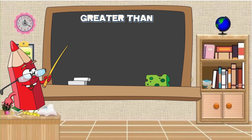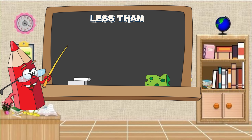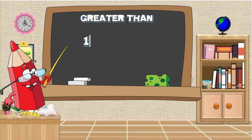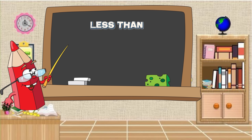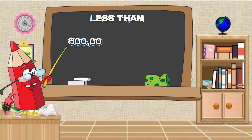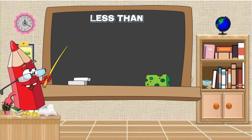Greater than: one hundred and five is greater than one hundred. Less than: ten thousand is less than one hundred thousand. Greater than: one thousand is greater than eight hundred. Less than: eight hundred thousand is less than eight million. And lastly, less than: one hundred and ten is less than one hundred and forty.